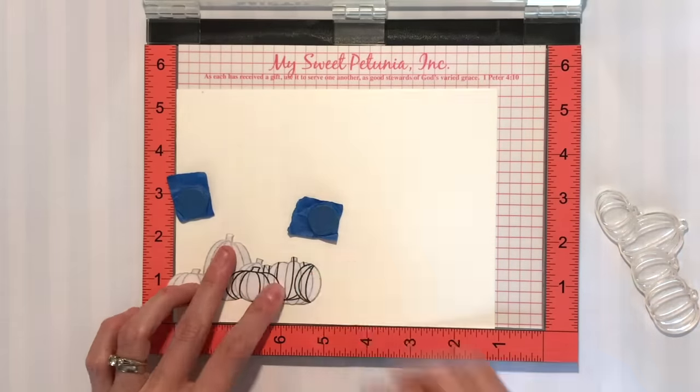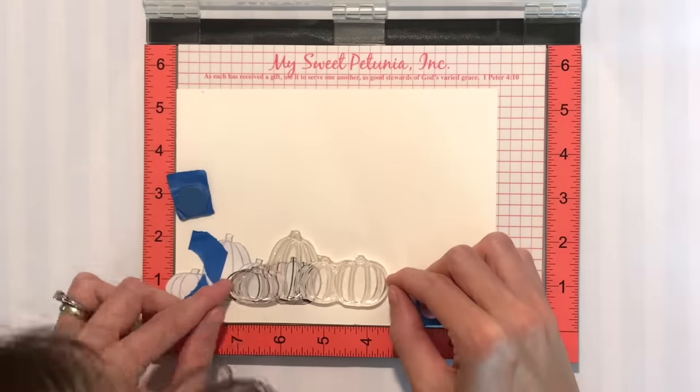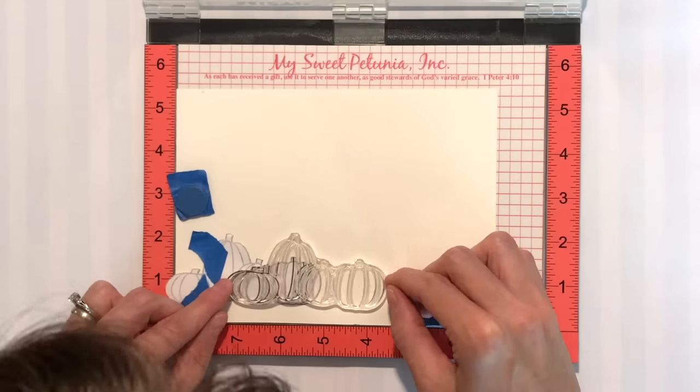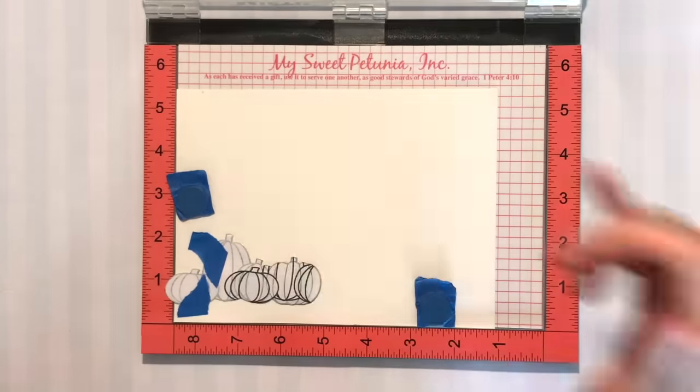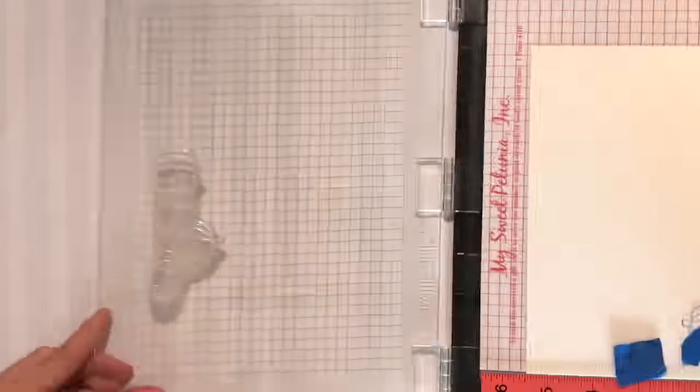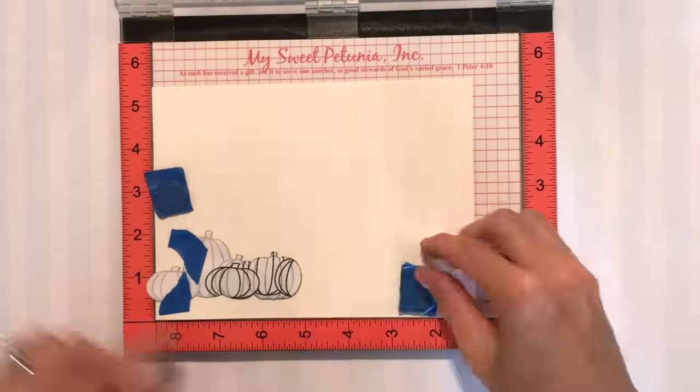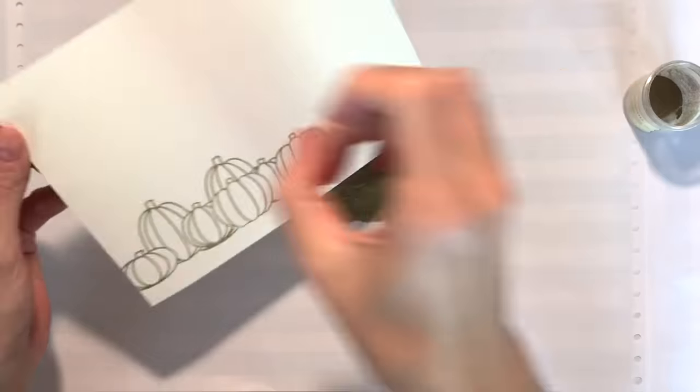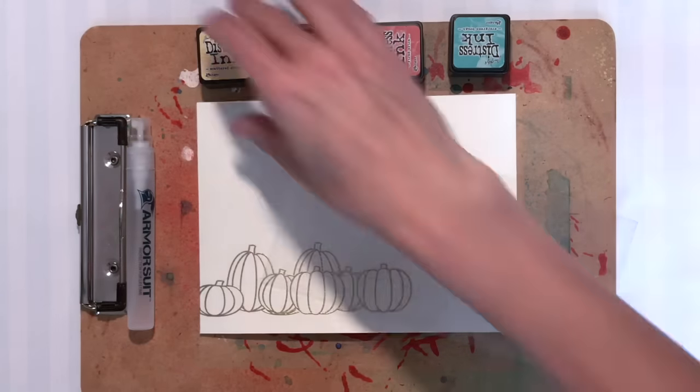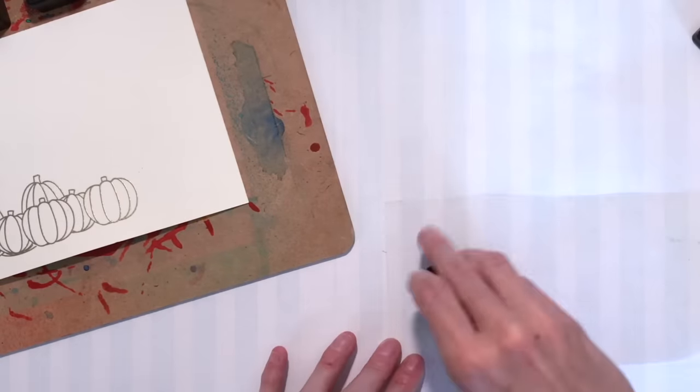Got it all set here and now I'm putting on a mask that I created by fussy cutting the image that I stamped on copy paper and positioning my pumpkins, that set of pumpkins again, slightly overlapping that first set. That's going to make those pumpkins look like they are behind that first set of pumpkins so a nice long row. I also stamped those in embossing ink and gold embossed those as well.